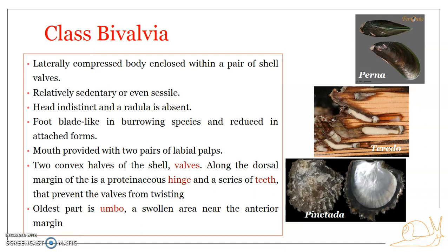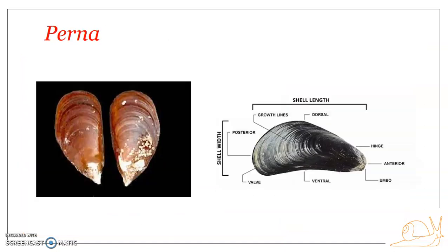The nervous system is well developed. Statocysts are the chief sense organs in bivalves. The sexes are separate in most cases, and fertilization is external, with development being indirect via a glochidium larva — a highly motile larval form of bivalves.